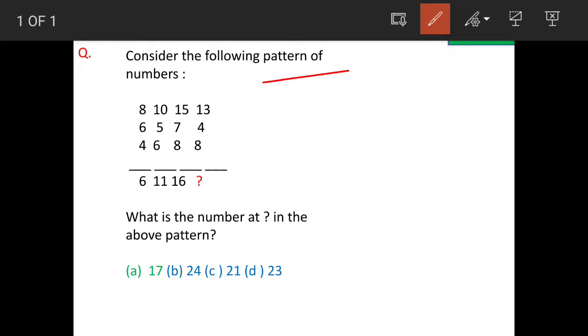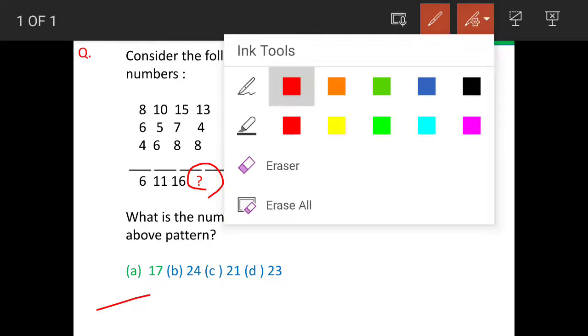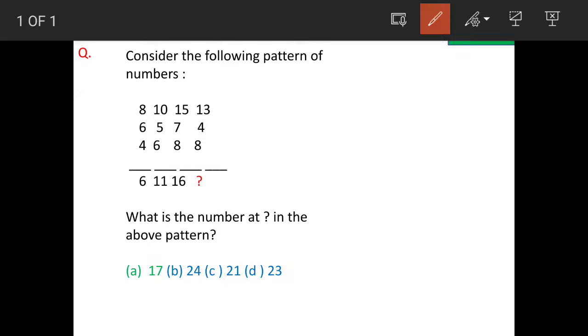Consider the following pattern of numbers and we have to find out the missing number here. And the answer is option A, 17. So we will analyze how this has been done.